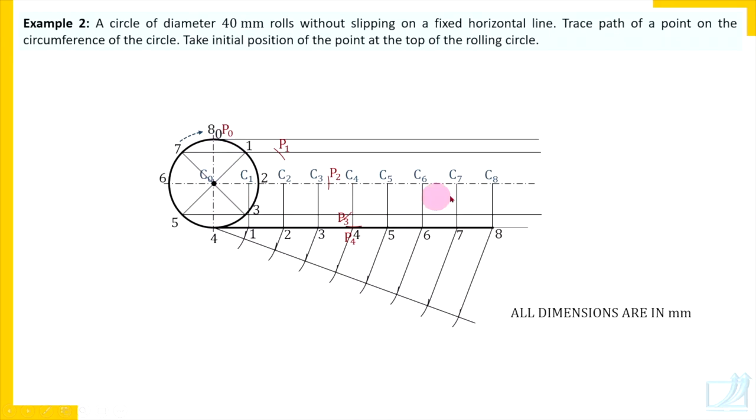We have divided the entire distance πD in 8 parts. That means in fourth position, that is after half a revolution, this point P will come in contact with the line, the horizontal line or guiding line.